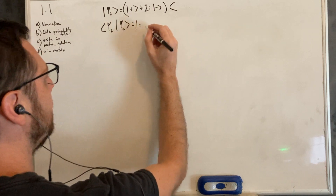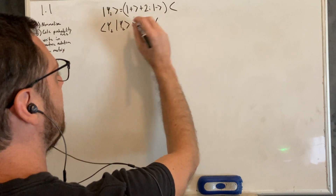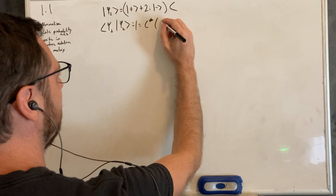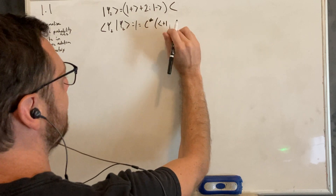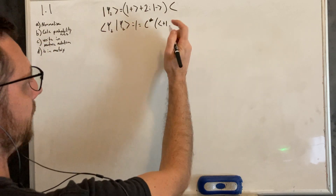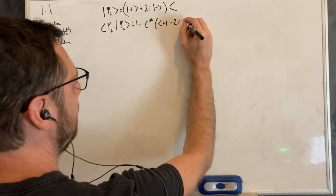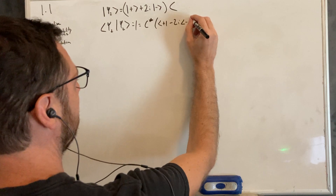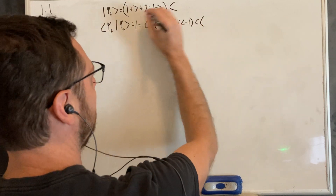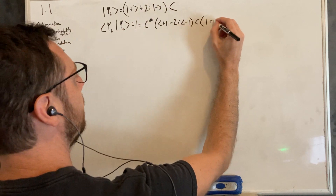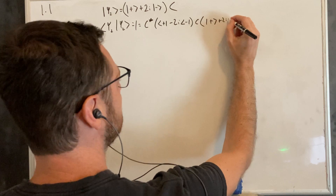So the bra of this is going to be c star, just like before. That's going to be the bra plus. This is going to be minus because we need to take the complex conjugate of anything that's an i — it's going to be negative i. So minus 2i, and then the bra of that. Then we have c, and then as is, plus 2i, and then our minus.